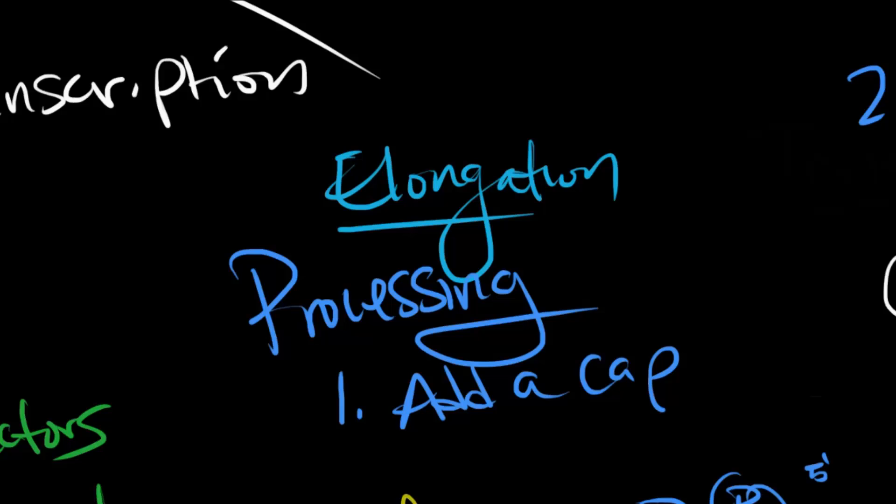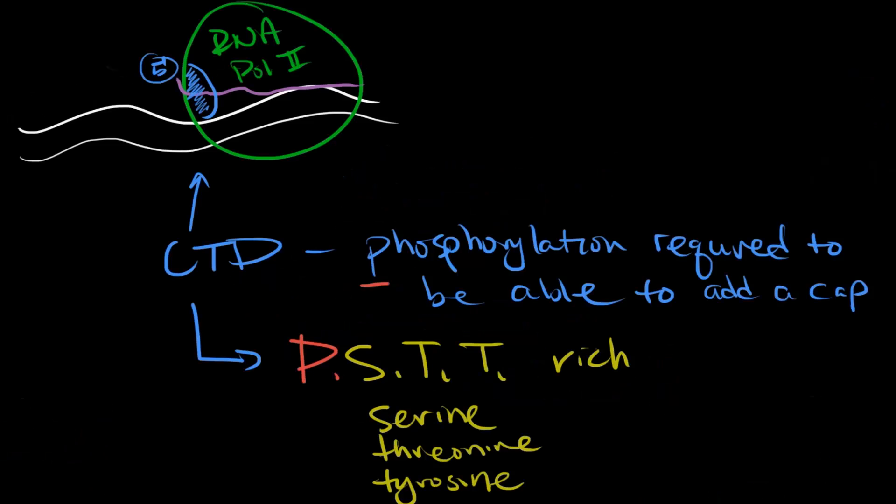During elongation, mRNA undergoes three steps of processing. The first is adding a 7-methylguanosine cap to the 5' end. There's a region on RNA polymerase II called the carboxy terminal domain, or CTD for short. This region has a lot of amino acids that can be phosphorylated, so the PSTT or psst amino acids. Remember the two T's. Only if the CTD is phosphorylated can it add this cap, which protects it from 5' to 3' exonucleases from digesting the mRNA. In order for the mRNA to survive, the moment it gets long enough to reach the CTD, it gets capped. Otherwise, a 5' to 3' exonuclease will eat it and kick off the RNA polymerase.